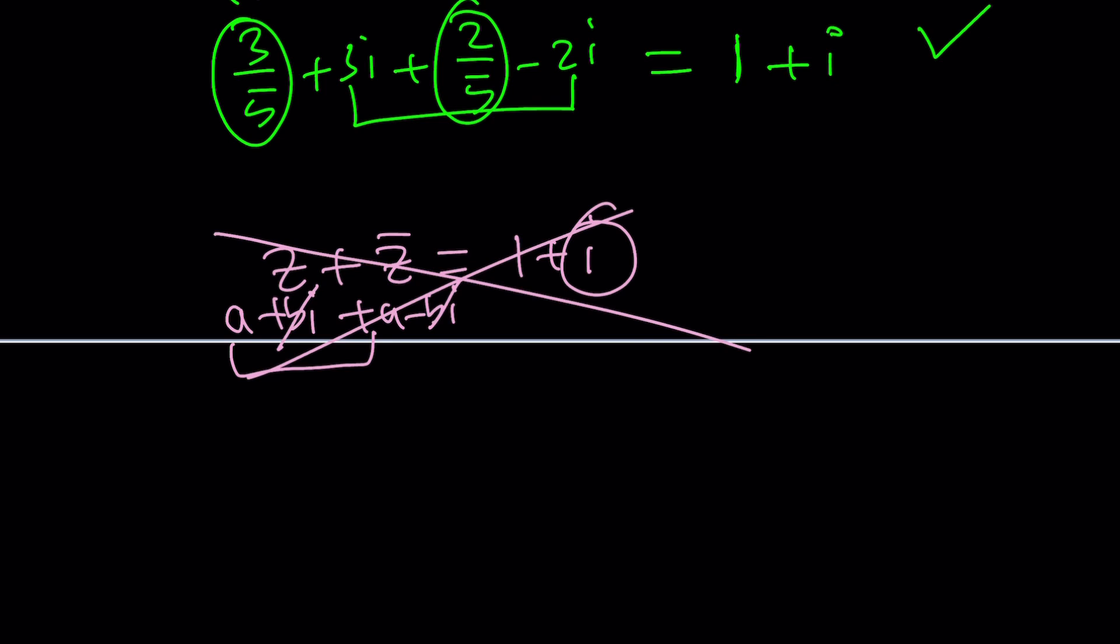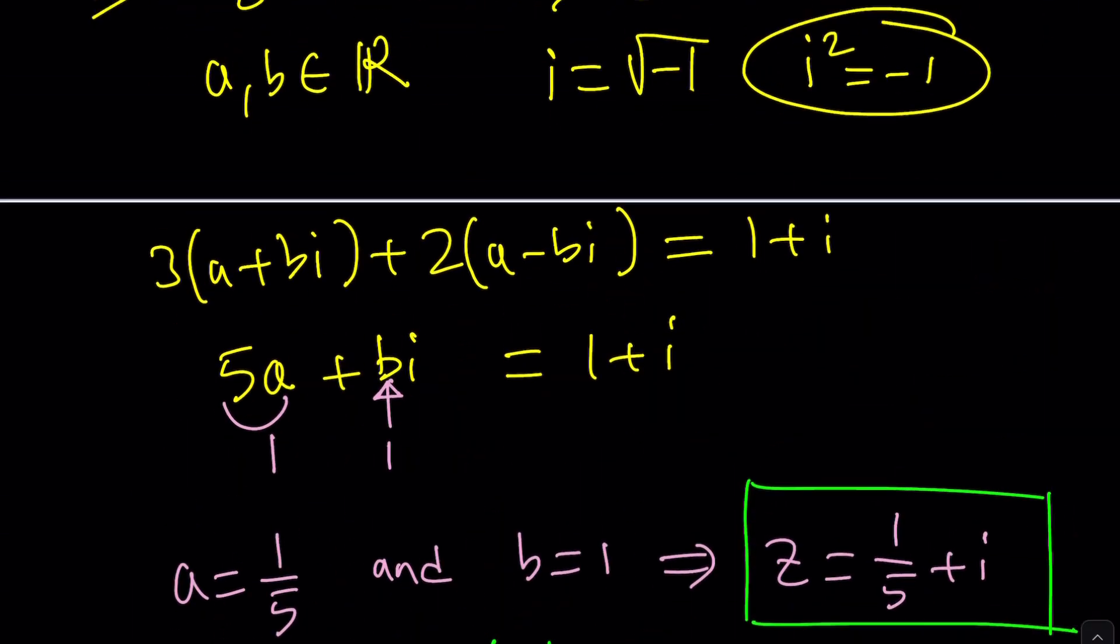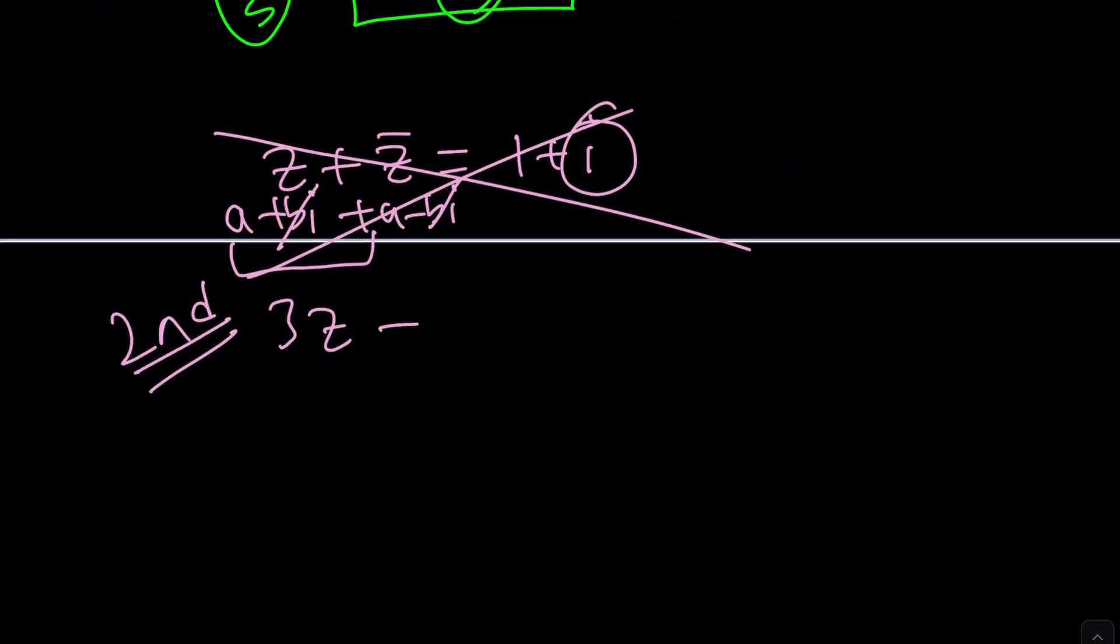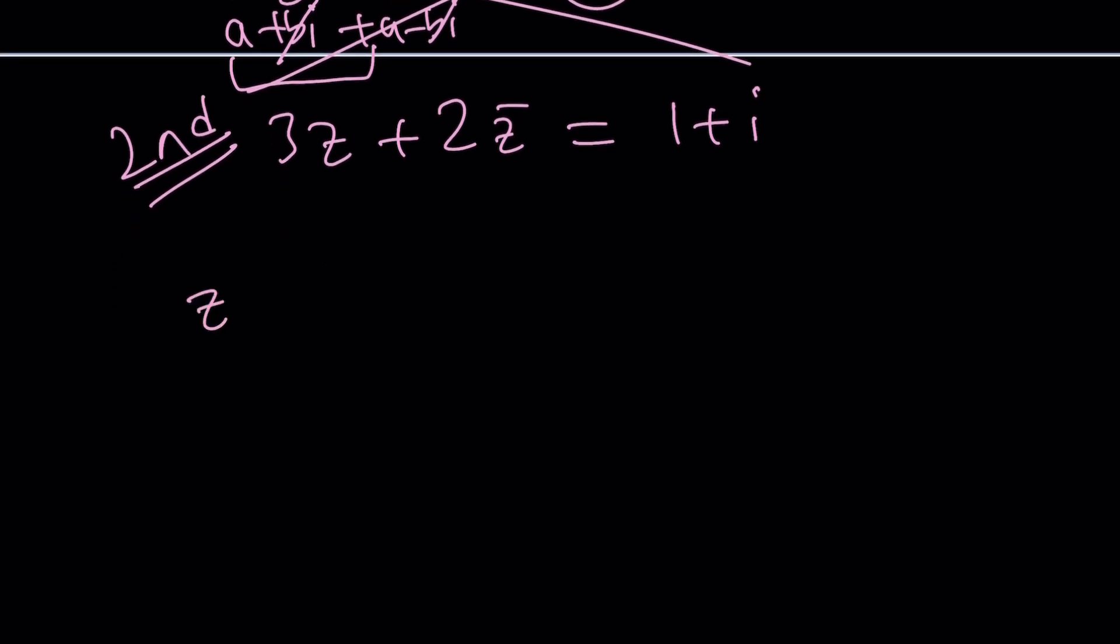Let's take a look at the second method. You're going to get to decide which method you like better. What was the original problem? 3z + 2z̄ = 1 + i. We're going to use some properties. If you look at the basics of complex numbers in the lecture videos, we go over these things. For example, what is the conjugate of the conjugate? It's z itself.